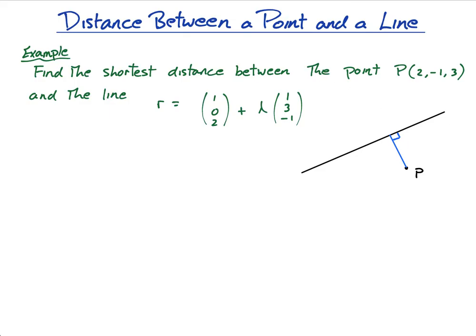So that's P. What's this point here that is on the line? We don't know — let's call it point A to begin with. I said the word perpendicular, and when you hear perpendicular in a vectors question you should immediately think: the dot product must equal zero. That is what we have for perpendicular vectors — the dot product equals zero.